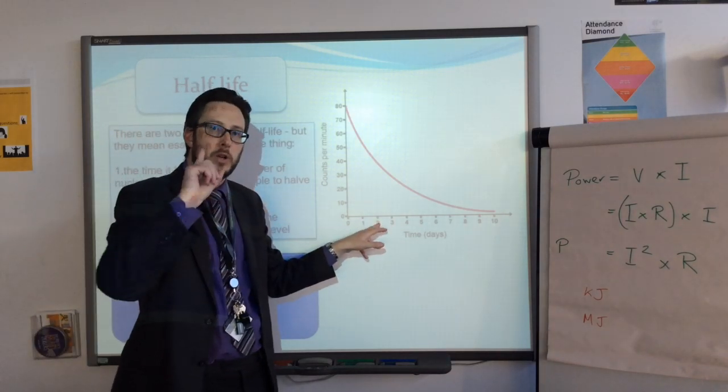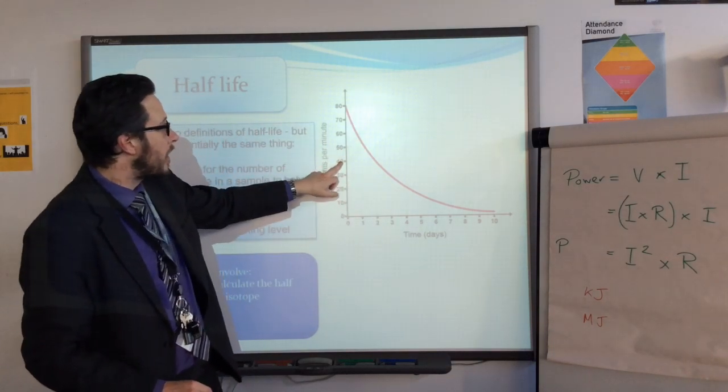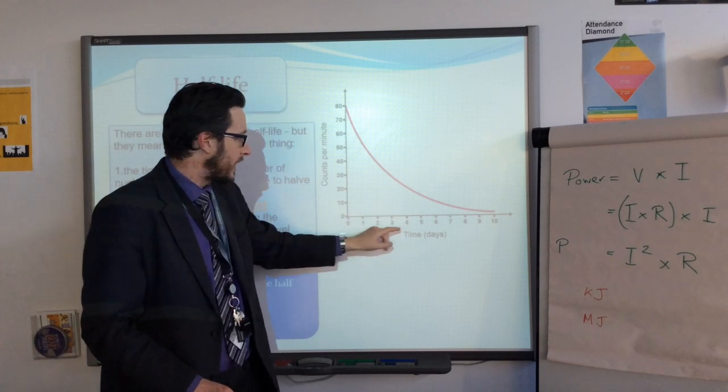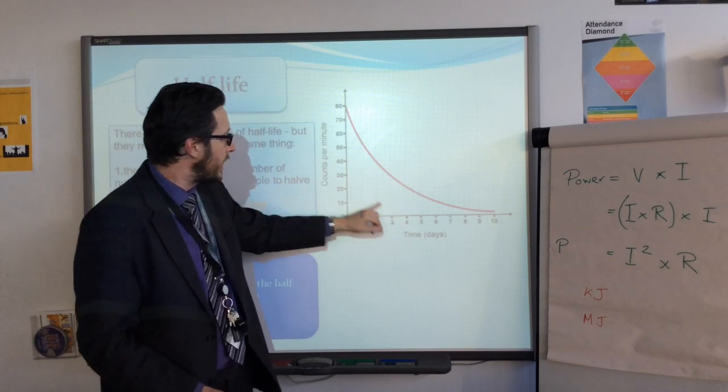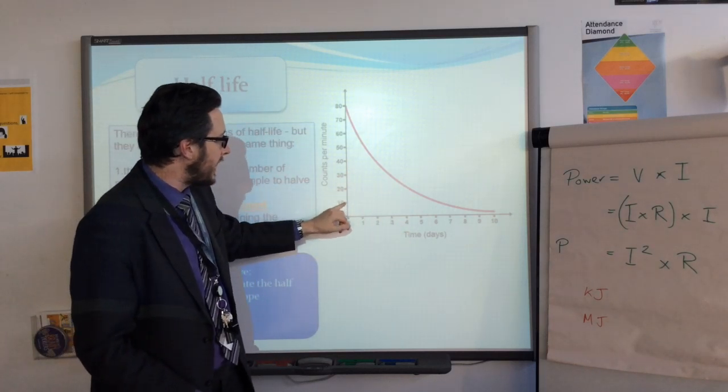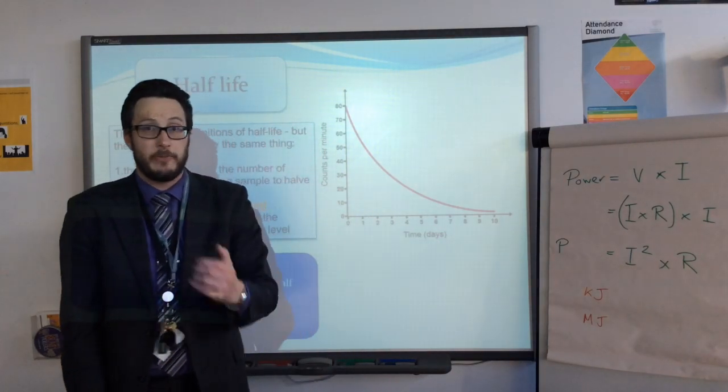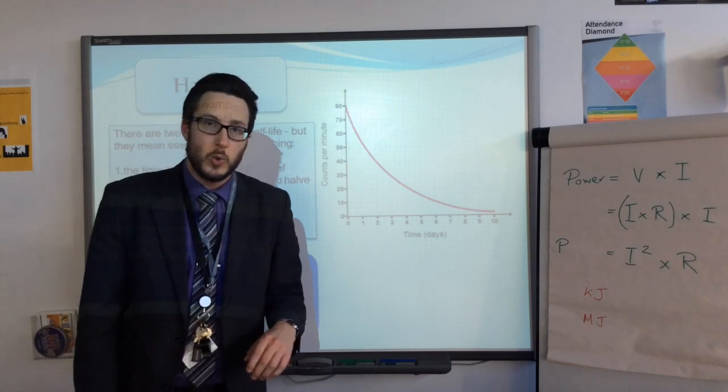Now, I could just say the half-life is two days. And I wouldn't be wrong, but I would lose a mark if I didn't then check it by saying, what's half of 40? 20. Go along, down, four days. So another two days has gone by. And again, what's half of 20? 10. Go along, down, six days. So it's going up in twos each time. So I've confirmed the half-life is two days.